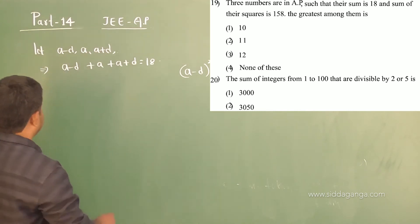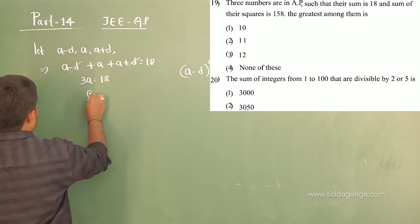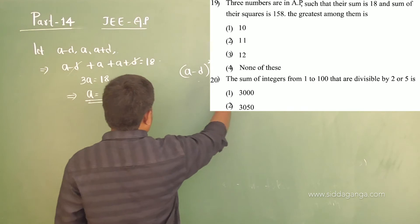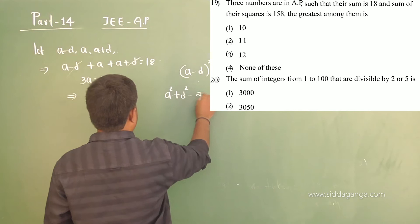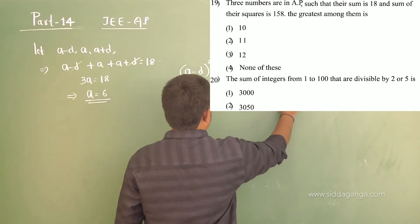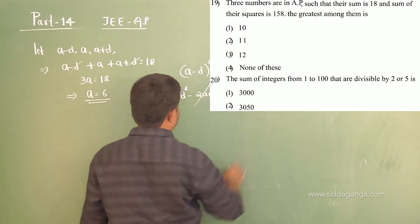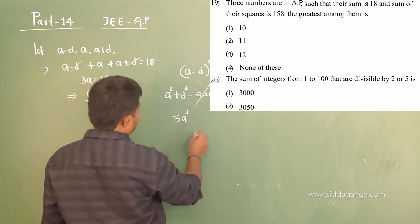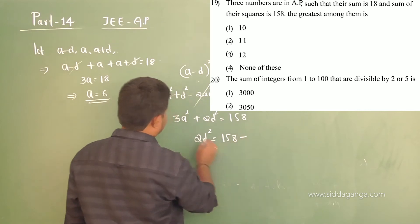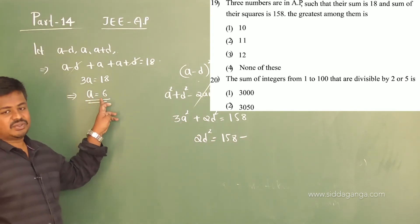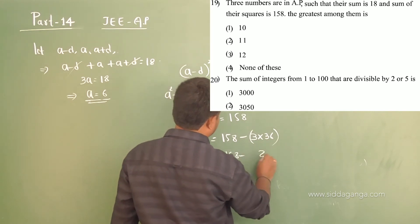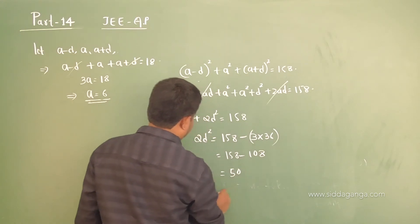From the sum equation, 3a equals 18, so a equals 6. Now expanding the sum of squares: (a minus d)² plus a² plus (a plus d)² expands to a² plus d² minus 2ad plus a² plus a² plus d² plus 2ad, which simplifies to 3a² plus 2d² equals 158.